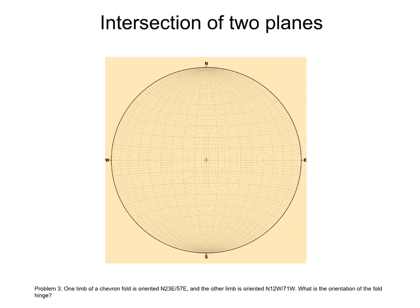And the other limb is oriented north 12 west, 71 west. Both measurements are strike and dip. What is the orientation of the fold hinge?